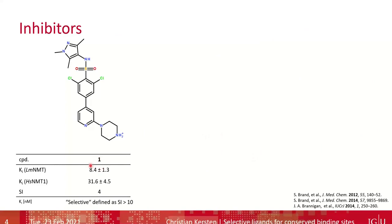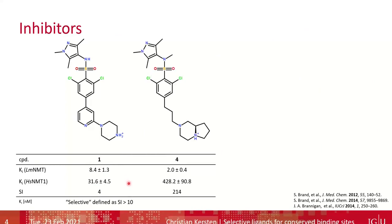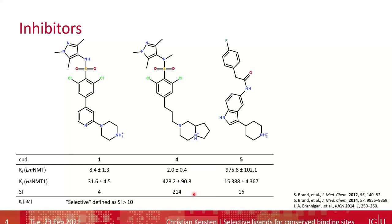Despite this high similarity, we find in the literature selective ligands. Compound 1, seen in the crystal structure, is non-selective with low nanomolar potency for both NMTs. Within the series, compound 4 is highly selective: 2 nanomolar Ki for LmNMT and 428 nanomolar for HsNMT1, giving around 200-fold selectivity. We also find structurally different scaffolds like compound 5, which is a little less active overall — 975 nanomolar for LmNMT and around 15 micromolar against HsNMT1 — resulting in at least 16-fold selectivity.